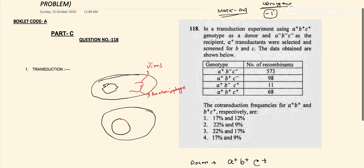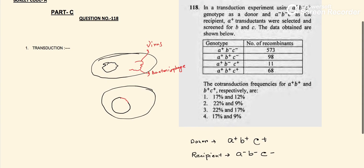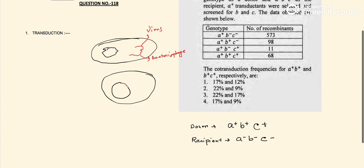The recipient carries a- b- c- — all inactive genes. They have selected a+ transductants and screened for b and c, because a+ is present in every part of the data. They want to know the co-transduction frequency for a+ b+ and b+ c+ respectively, and they have given four options.